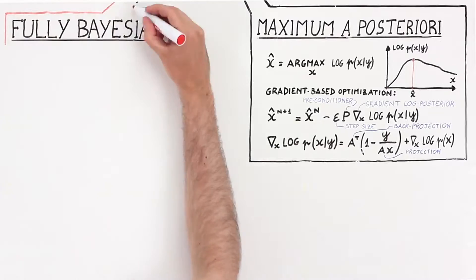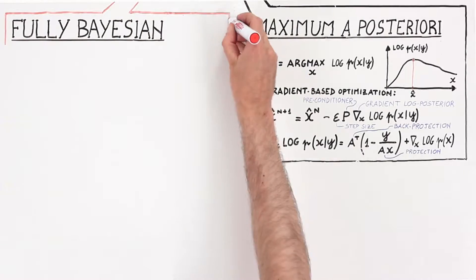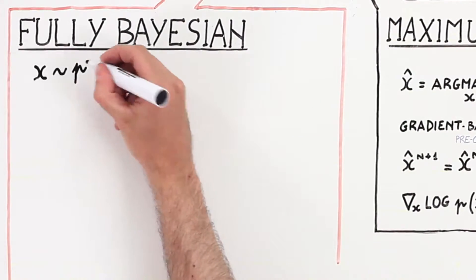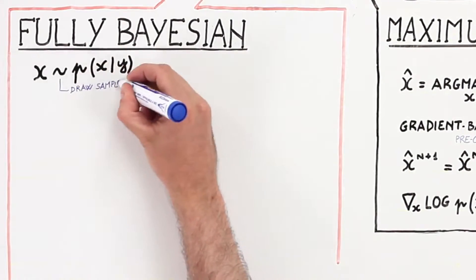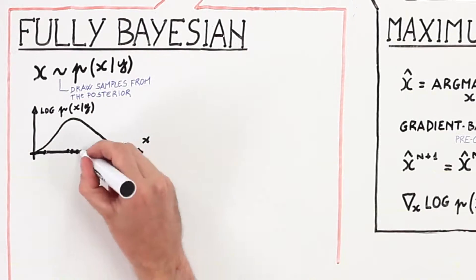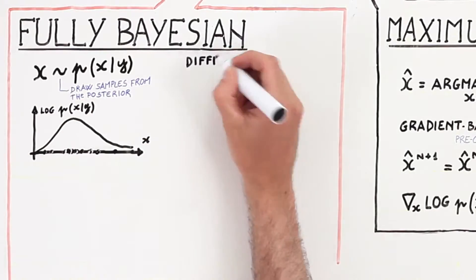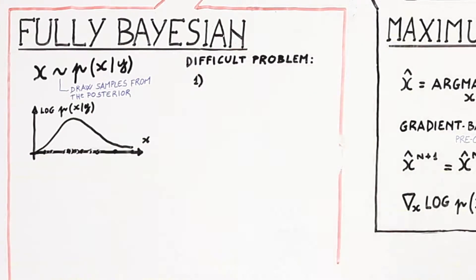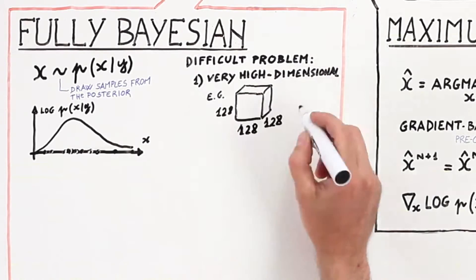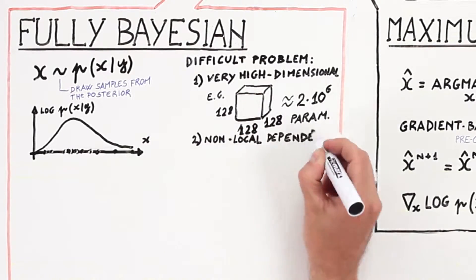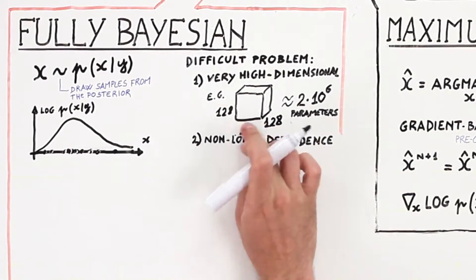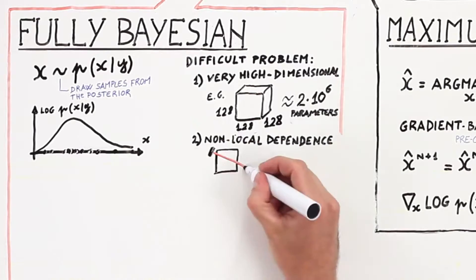Rather than computing the maximizer, the fully Bayesian approach aims to characterize the whole space of solutions. The computational complexity of the fully Bayesian approach has hindered its application in high-dimensional problems that present strong non-local interdependence of the parameters, such as tomography.